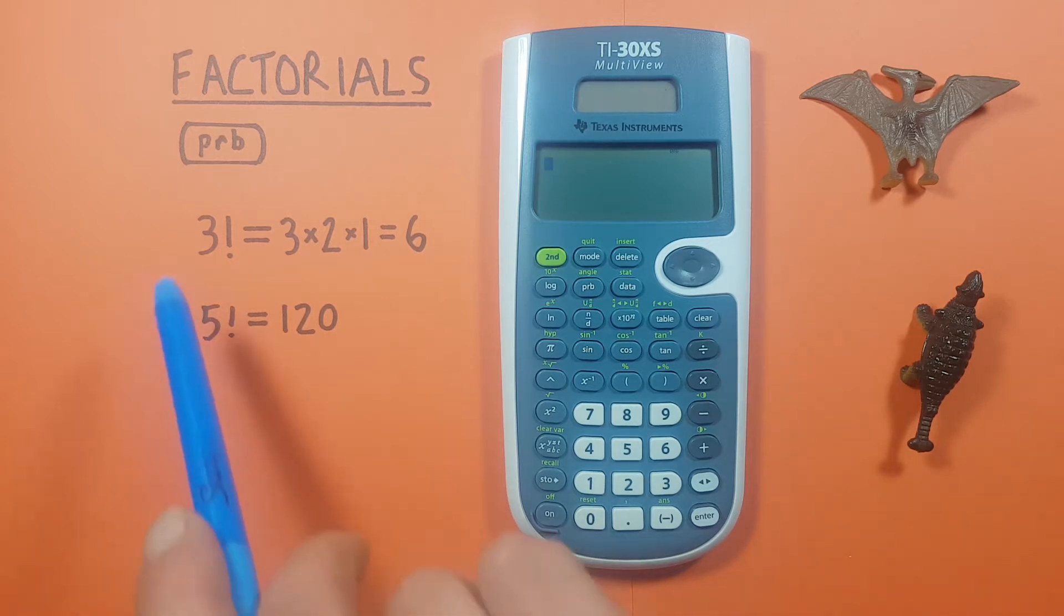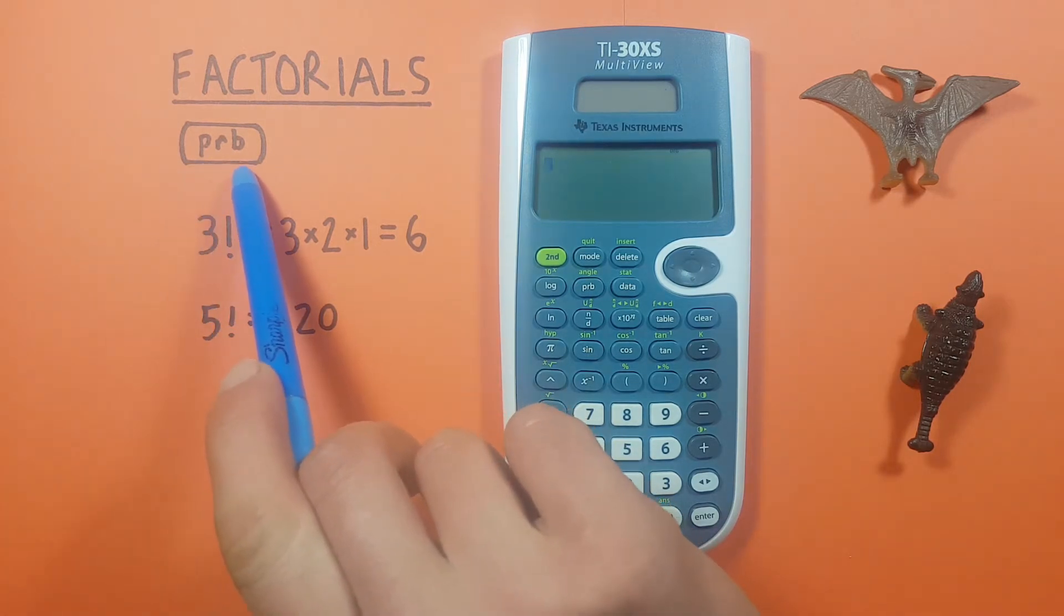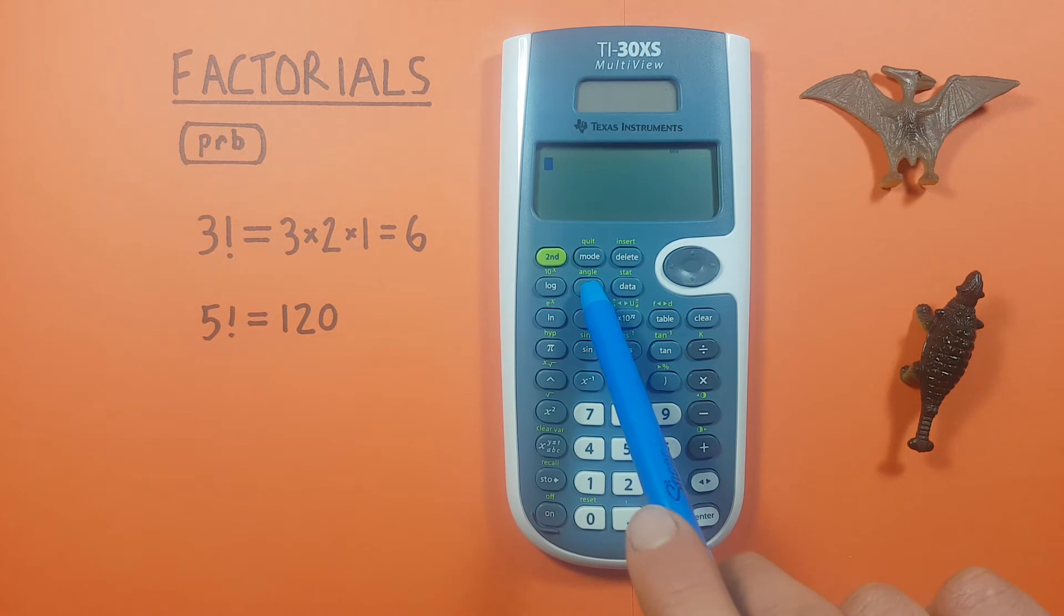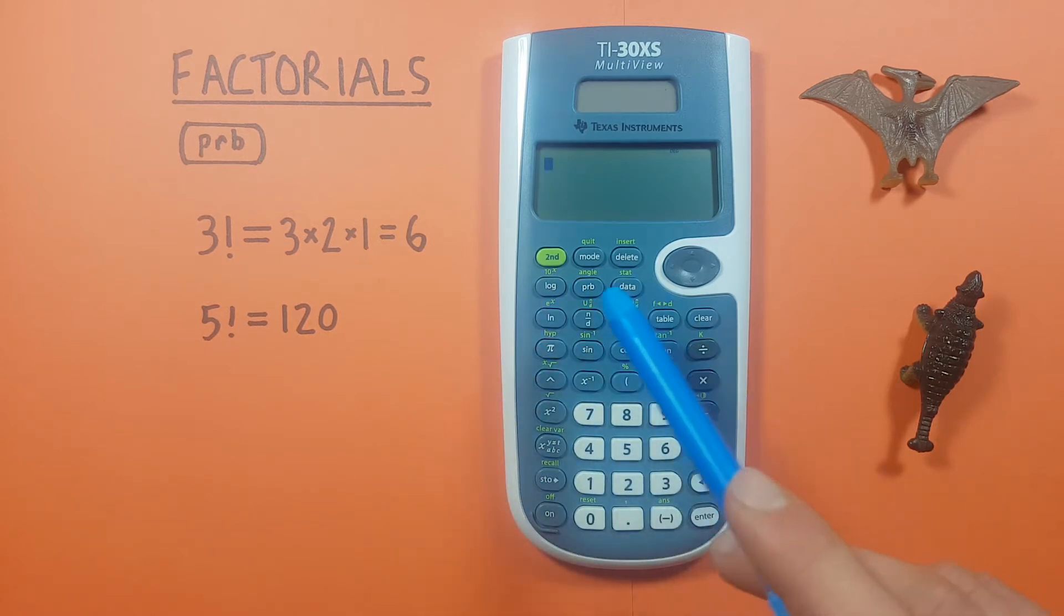To do this we'll need to use the PRB or probability key that looks like this located here. Now if we want to enter a factorial on this calculator and we look at the keyboard there will be no obvious factorial key here.